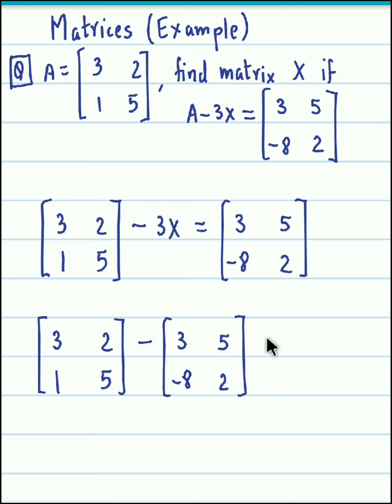Now transferring this matrix onto the left hand side we get minus of 3, 5, minus 8, 2. And negative 3X we transfer it on the right hand side, so we obtain 3X over here.